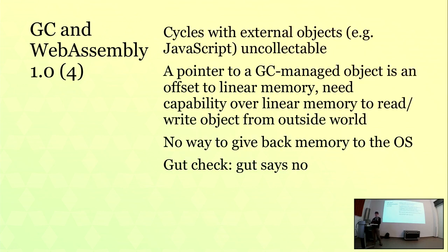It gets worse. When you're building a web application targeting WebAssembly on the web, you're going to have callbacks from JavaScript, and JavaScript is going to reference WebAssembly objects — this is a very common pattern that's almost impossible to avoid. So you'll have cycles between the JavaScript heap with its garbage collector and our linear memory heap, and these things don't know anything about each other. In practice, these cycles are going to be uncollectable and lead to memory leaks.